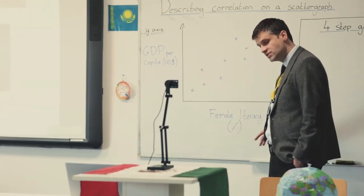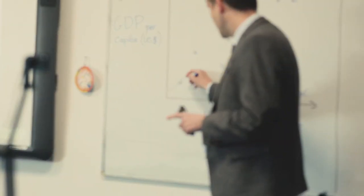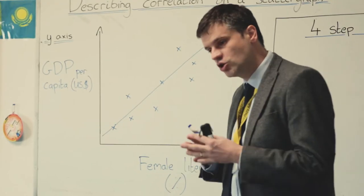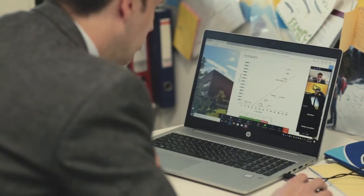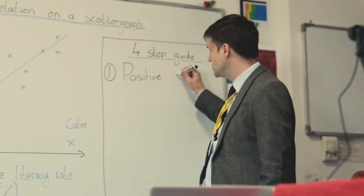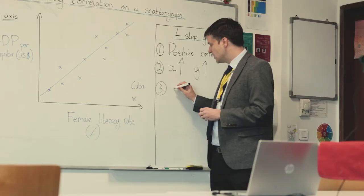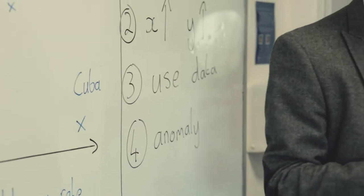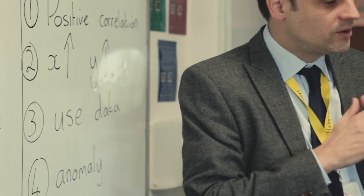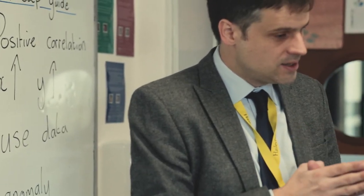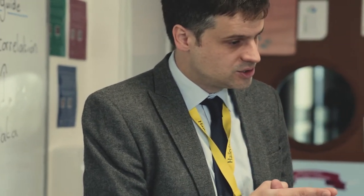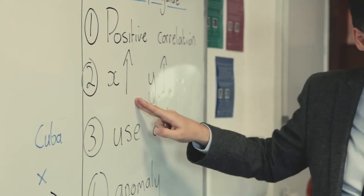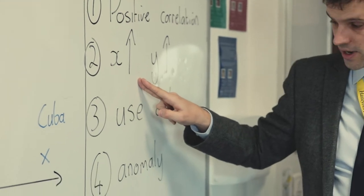What happens as female literacy increases? There is a correlation — it's a positive correlation. What I'll do is use data; there is a really easy way to do this. What would happen — tell me what that means for the X and the Y axis.